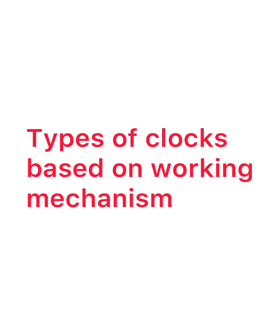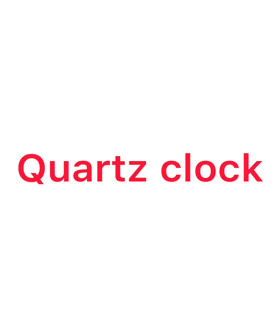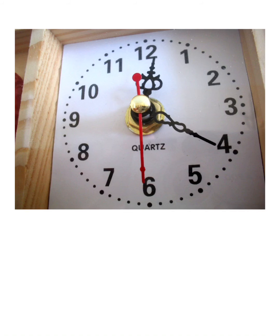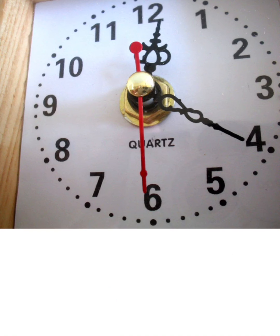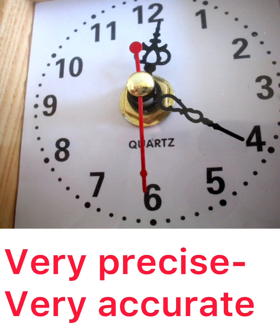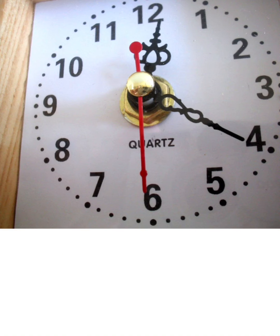Now let's learn the types of clocks based on the working mechanism. Based on working mechanism, clocks are classified into two types: quartz clock and atomic clock. The quartz clock is activated by electronic oscillation — meaning the movement of current — which is controlled by quartz crystals. The crystals are made up of silicon dioxide. The movement of the quartz crystal is very precise, giving more accurate and correct values than a mechanical clock. These quartz clocks have an accuracy of one second in every 10 to the power of 9 seconds. Quartz clock movement may last around 10 to 15 years, but they will not last forever.